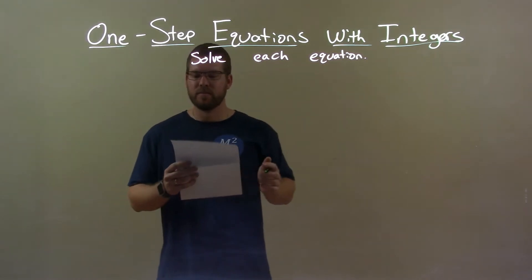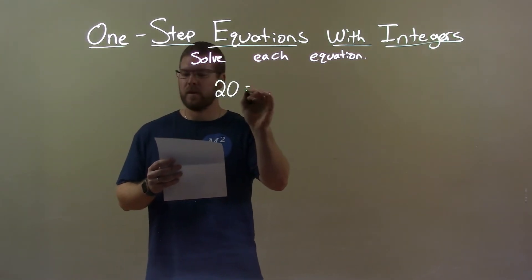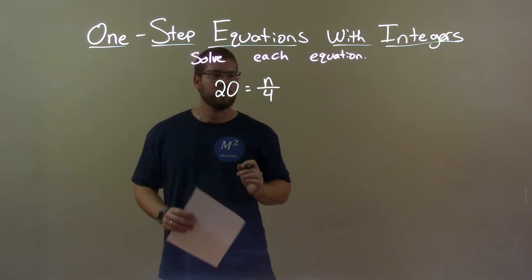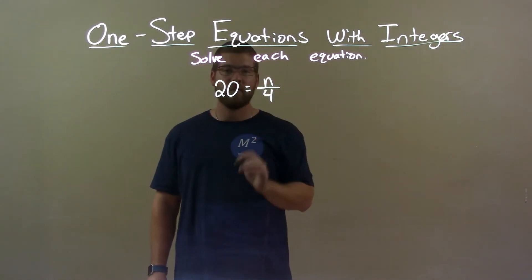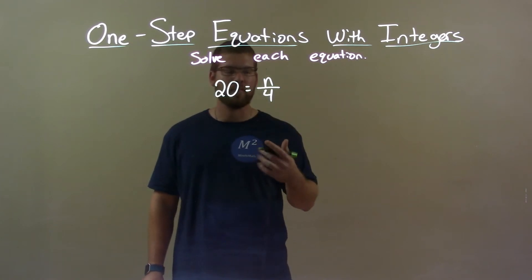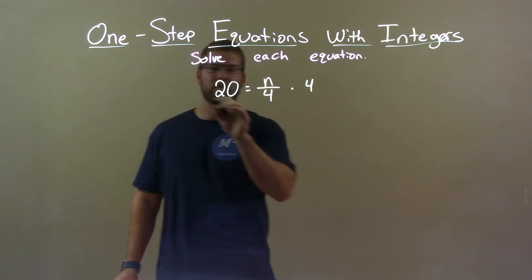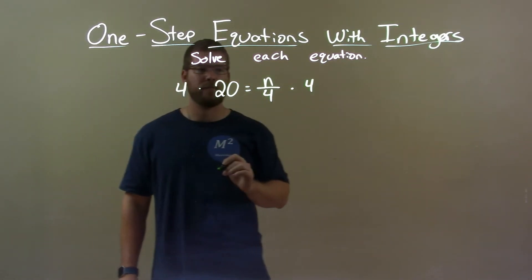If I was given this equation, 20 equals n over 4. First thing I want to do is to get n by itself. It's being divided by 4 so I have to get rid of the 4 or move it to the other side. Opposite of division is multiplication so I'm multiplying both sides by 4.